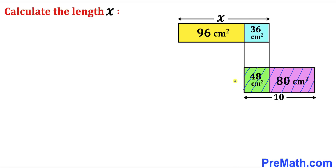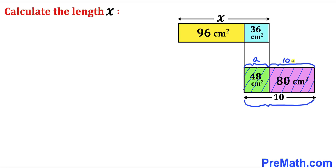Let's focus on the green and purple boxes combined. Let's assume this horizontal distance is a, and we know the whole horizontal distance is 10, so therefore this other distance has got to be 10 minus a.